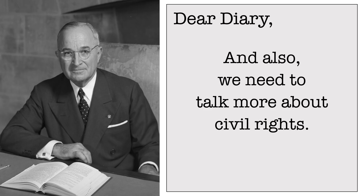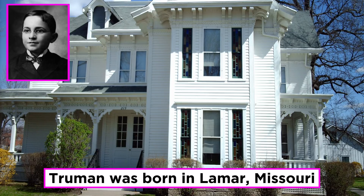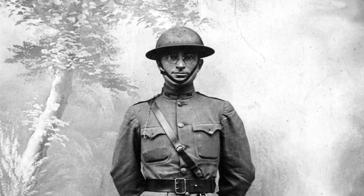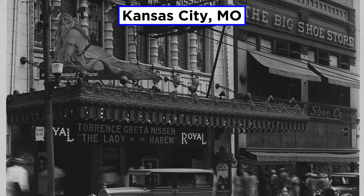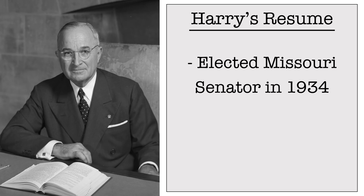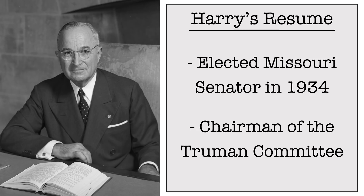Truman was born in Lamar, Missouri, and spent most of his youth on his family's 600-acre farm near Independence. He served in combat in France during World War I as an artillery officer with his National Guard unit. After the war, he briefly owned a haberdashery in Kansas City, Missouri, and then joined the Democratic political machine of Tom Pendergast. Truman was elected U.S. Senator in 1934 and gained national prominence as chairman of the Truman Committee, which exposed waste, fraud, and corruption in federal government wartime contracts.